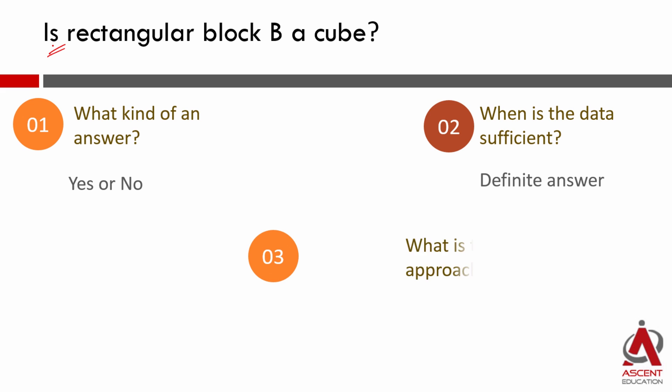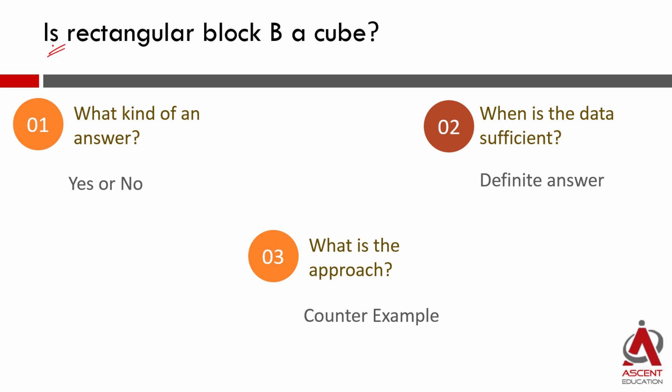The approach we are going to take is to essentially look for a counter-example. If within the data you are able to find both a case where it is a cube and a case where it is not, then the data is not sufficient.